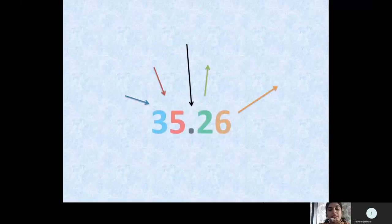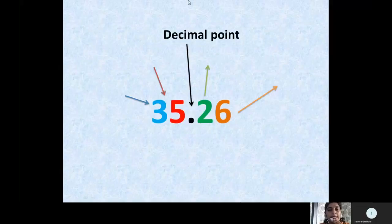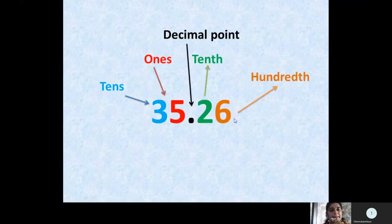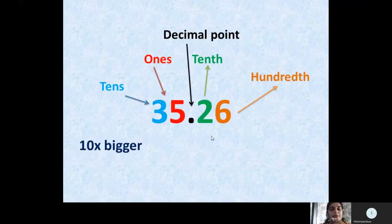In the number 35.26, this point is called decimal point. Before this point on the left side we have five — this five is in ones place. Before five we have the number three — this three is in tens place. Now after this decimal we have number two; this number two is in tenth place, and the six is in hundredth place. Every number on the left side of the decimal is ten times bigger than the previous number, and every number after the decimal is ten times smaller.